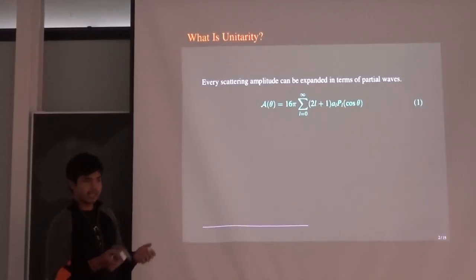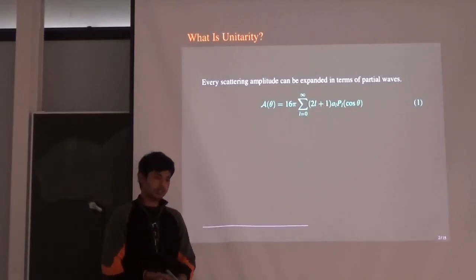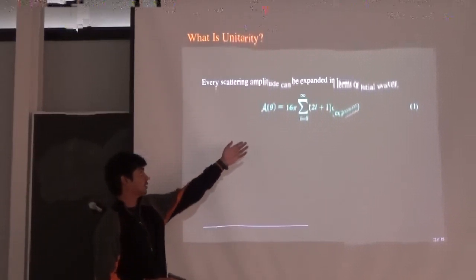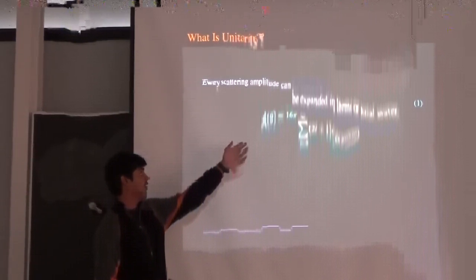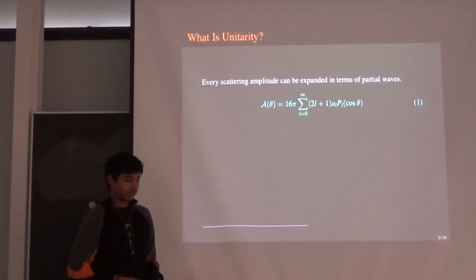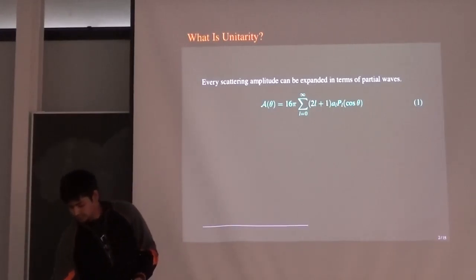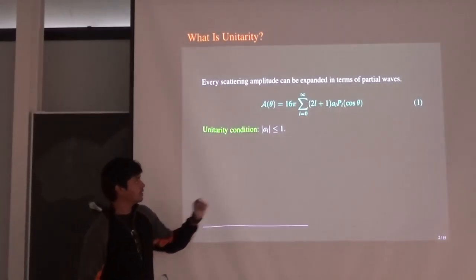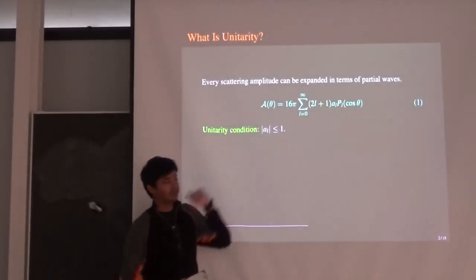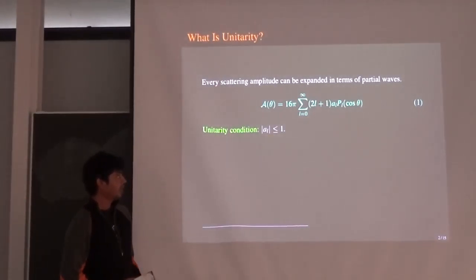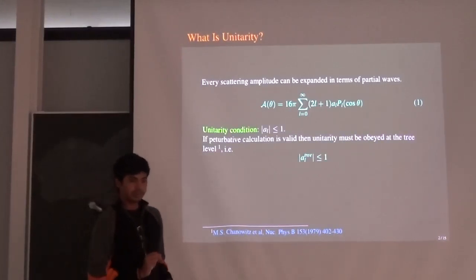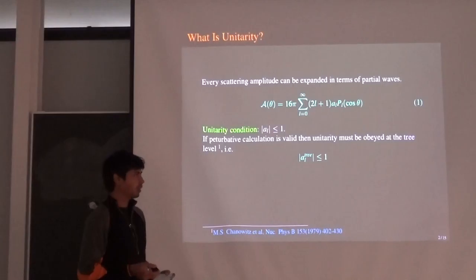You express any Feynman amplitude — since the Feynman amplitude will be a function of scattering angle — for any 2-to-2 scattering. Since it will be a complete function of the scattering angle theta, you can expand it in terms of Legendre polynomials. This is very general. But when you impose the condition that the S-matrix will be unitary, you can restrict that each and every partial wave amplitude will be less than or equal to 1.